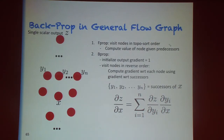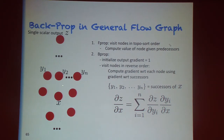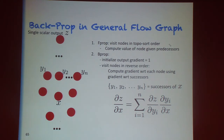We can generalize this to any computation graph, not just regular one-hidden-layer neural nets. The general algorithm has two phases: f-prop (forward propagation), which computes outputs of each node in topological order, and back-prop (backward propagation), which computes gradients of the final scalar output with respect to each node.